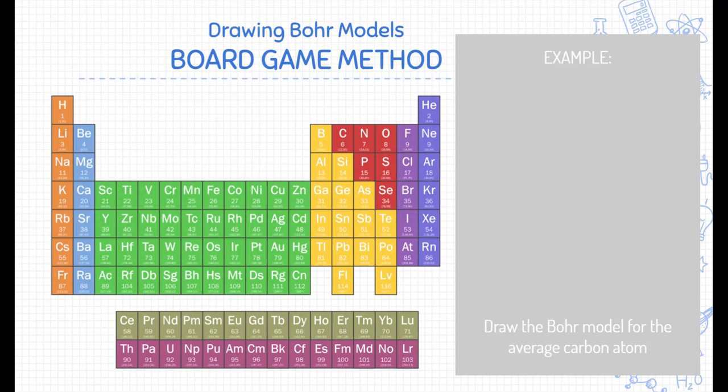Let's draw the Bohr model for an average carbon atom. So this is carbon as you would read on the periodic table. Remember, this is going to help us determine how many protons, neutrons, and electrons an element has. Well, let's talk about the nucleus first.